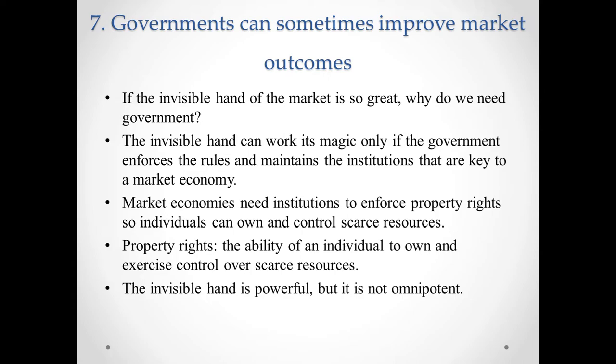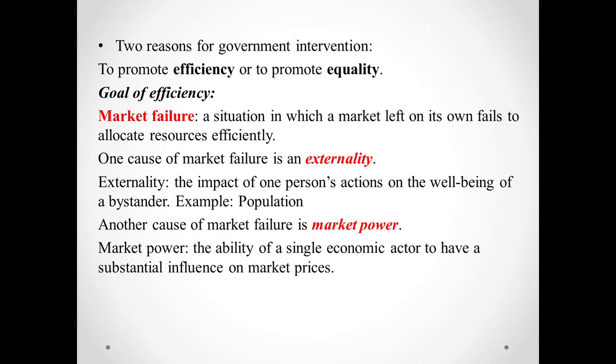There are two broad reasons for a government to intervene in the economy and change the allocation of resources: to promote efficiency and to promote equality. Regarding efficiency, economists use the term market failure to refer to a situation in which the market on its own fails to produce an efficient allocation of resources. One possible cause of market failure is an externality, which is the impact of one person's actions on the well-being of a bystander. The classic example of an externality is pollution.